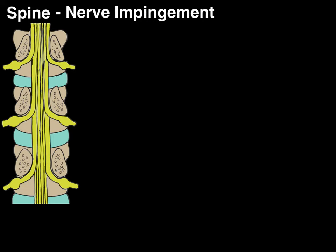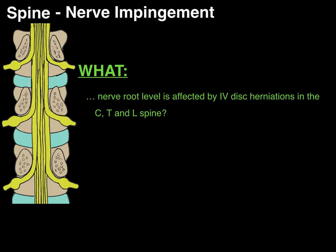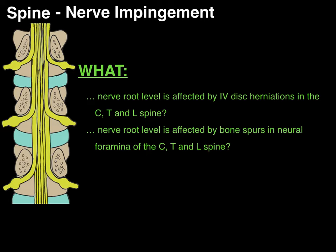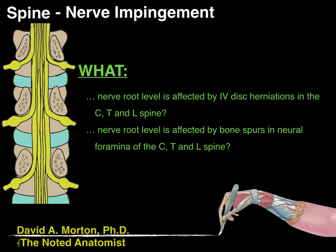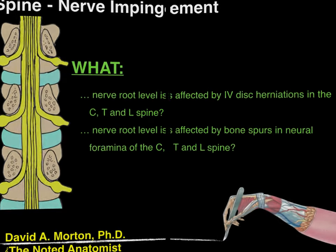We're going to talk about nerve impingement in the spine. I'm going to answer the 'what' questions: what nerve root level is affected by an intervertebral disc herniation in the cervical, thoracic, and lumbar spine, and what nerve root level is affected by something like a bone spur in the neuroforamina of the cervical, thoracic, and lumbar spine. My name is Dr. Morton, and I'm the noted anatomist.